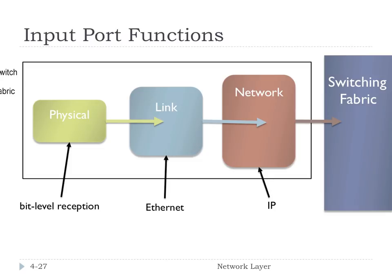Let's look at an input port in more detail. An input port has three components. It accepts packets at the physical layer, receives them at the bit level, and unpacks them, then passes them to the link layer. The link layer, something like Ethernet, implements the link layer protocol and extracts the frames into datagrams that the network layer is interested in, passing that up to network layer IP. Once we have the IP datagram, we pass it to the switching fabric to do the switching based on the IP address.